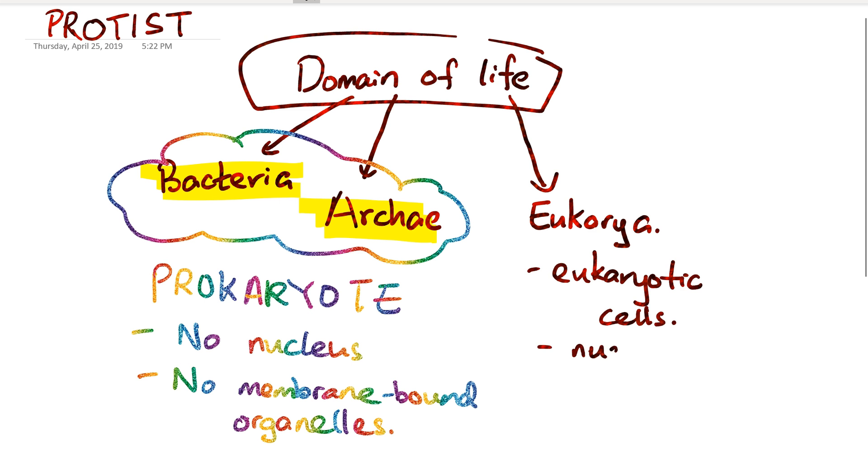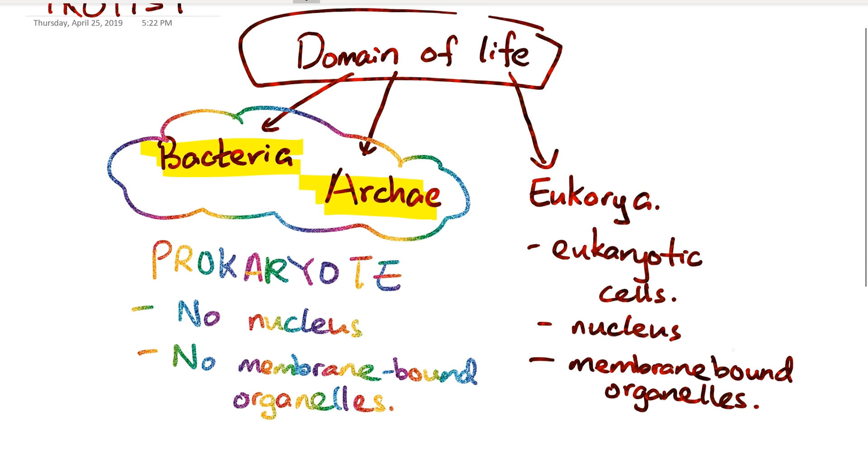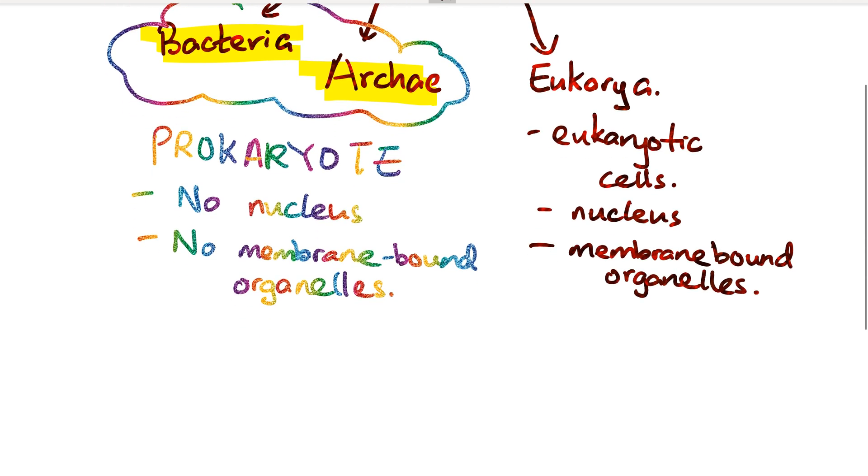Eukaryotic cells have a nucleus where genetic information is stored, and they have membrane-bound organelles such as Golgi apparatus, mitochondria, or chloroplasts. Most prokaryotes are unicellular, while eukaryotes are either unicellular or multicellular. Uni means one cell and multi means many cells.